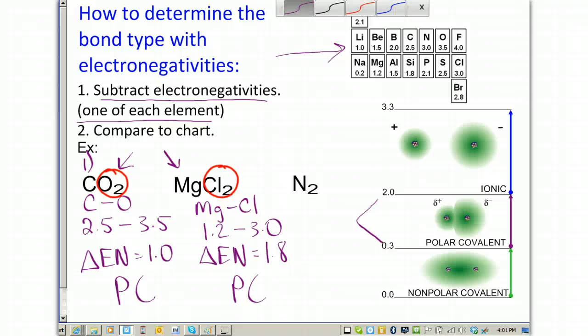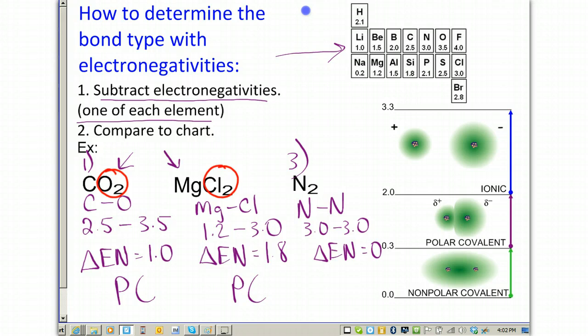One more example. We have N2. And what we're doing is comparing nitrogen bonded to another nitrogen. So, that's going to be 3.0 minus 3.0. And this gives us an electronegativity difference equal to zero, which you'll notice is here in the nonpolar covalent range. This means that the nitrogens are equally sharing their electrons. And if you'll look at the diagram next to nonpolar covalent, the electron cloud is evenly distributed over the two atoms.